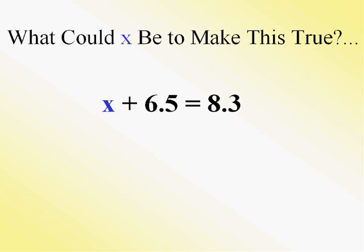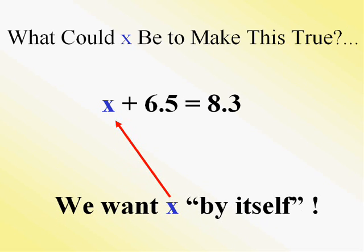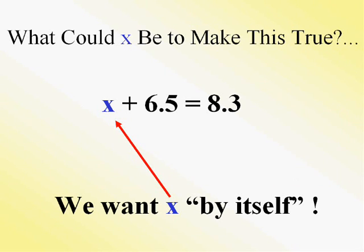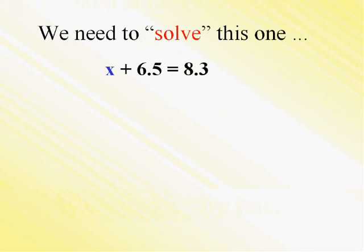Now in this problem, you can't do it in your head perhaps, so we want to get that goal of getting x by itself. It's not by itself, so I ask myself, who's keeping it from being by itself? We're going to have to get it by itself.